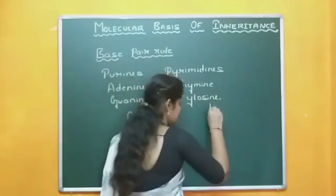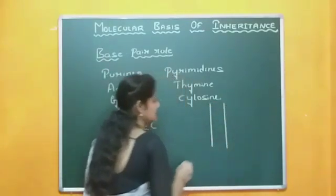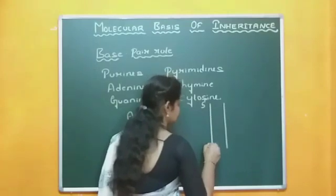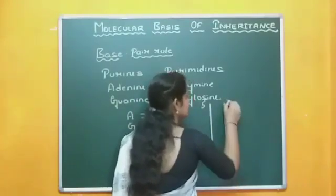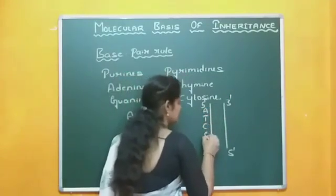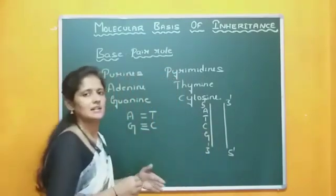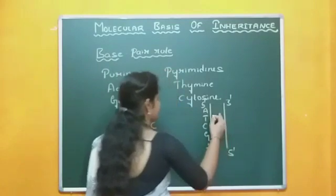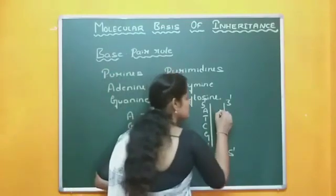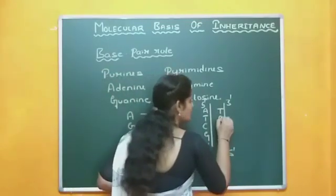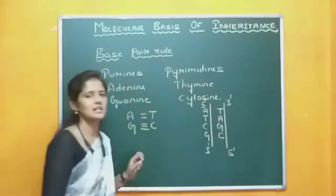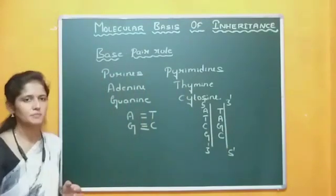For example, we can take a DNA strand. The DNA is made up of 2 strands and these 2 strands have anti-parallel polarity, so here 5' to 3'. Now we will write the sequence of one strand: A, T, C, G. If we know one strand, we can identify the other strand. We already know that purines always pair with pyrimidines: adenine pairs with thymine, thymine pairs with adenine, cytosine pairs with guanine, and guanine pairs with cytosine. This is the base pair rule.